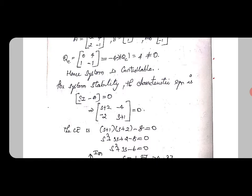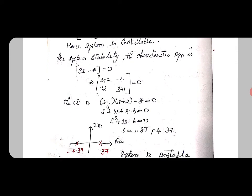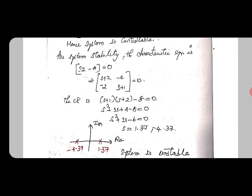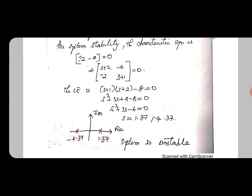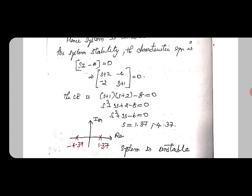Then s+1 times s+2 minus 8 equals 0. Solving the equation s² + 3s - 6 = 0, we find the s values as 1.37 and -4.37. Then we plot in the real-imaginary axis.